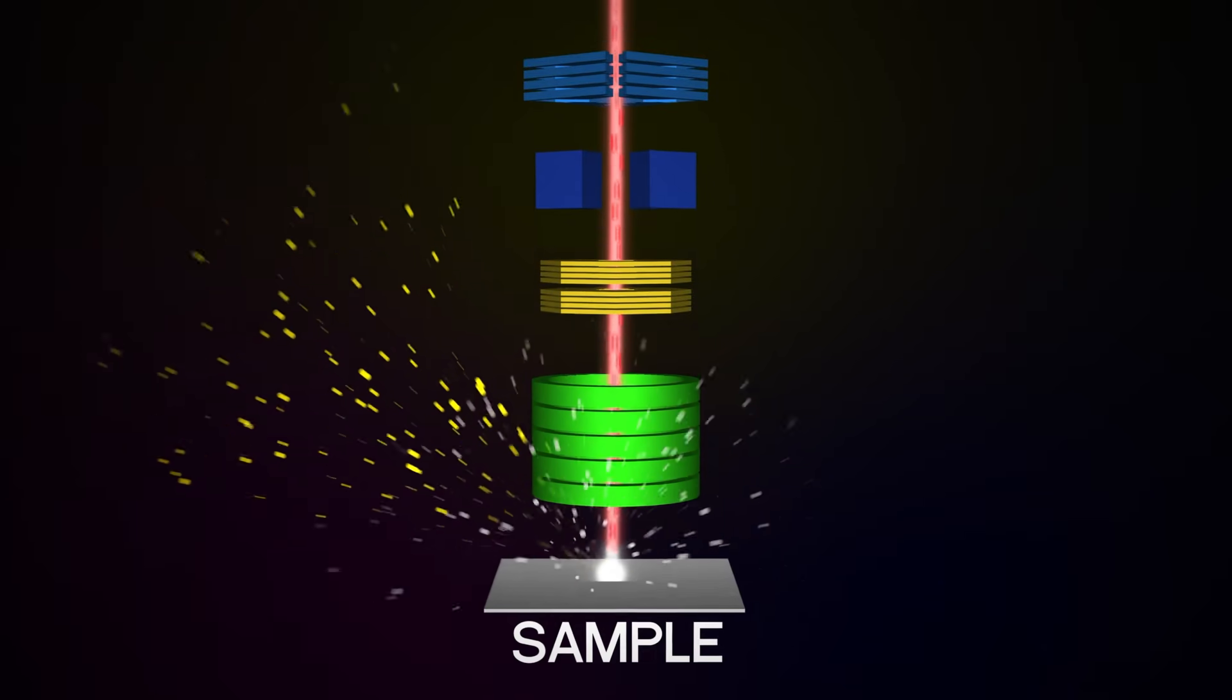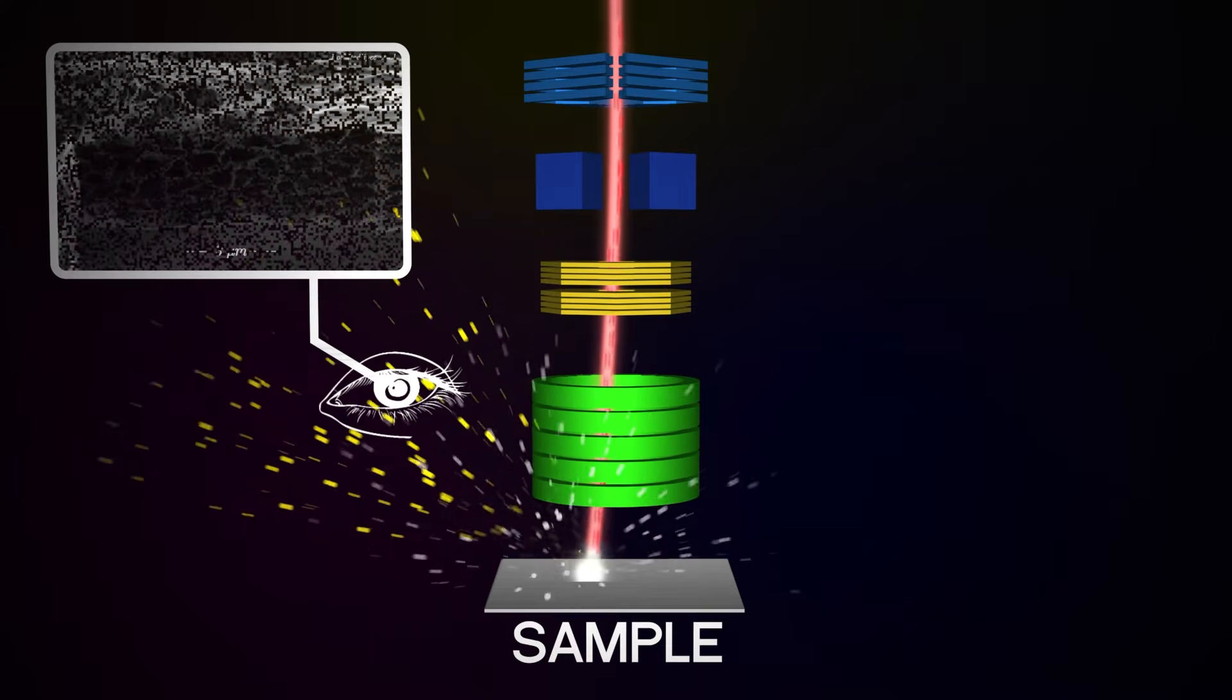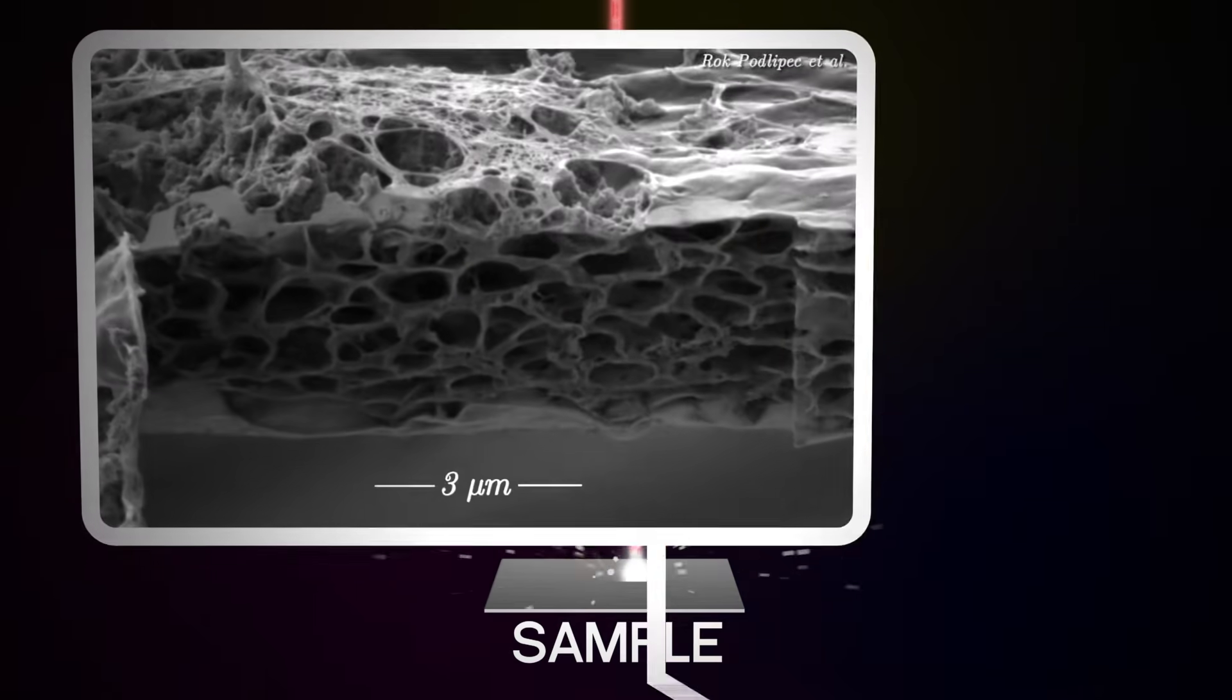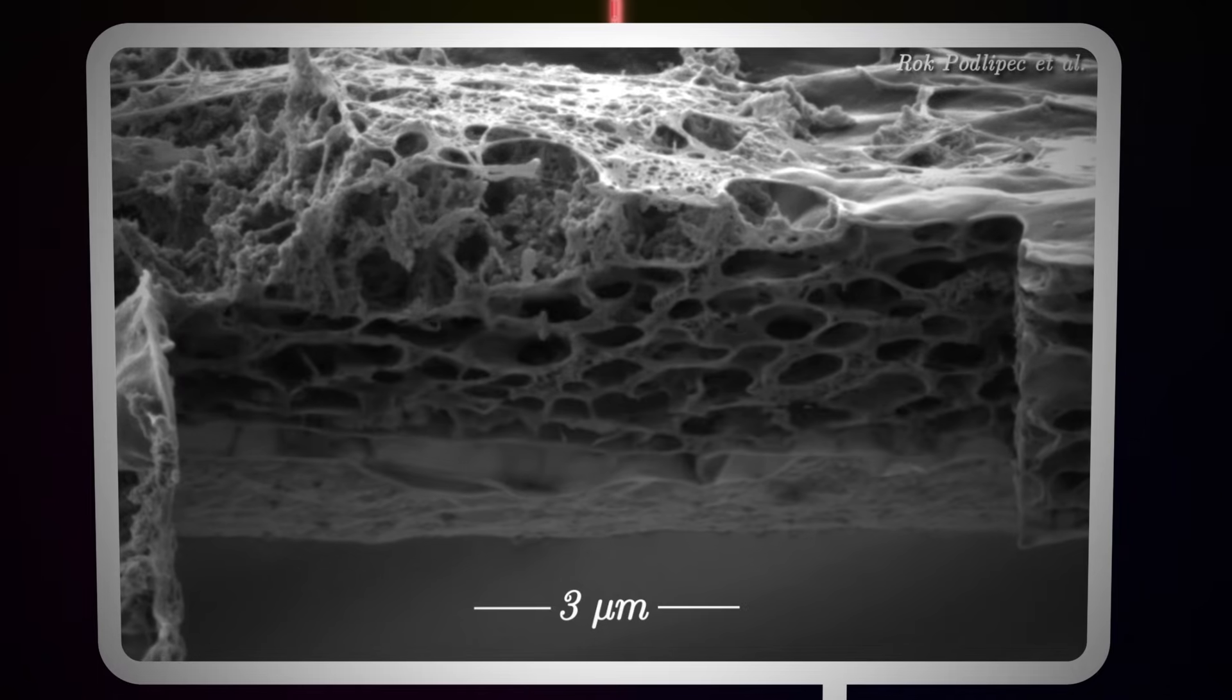The electrons generated in the impact area are collected to create images that are shown in real time in the operator's computer, where the fabrication pattern is designed.